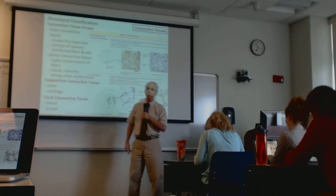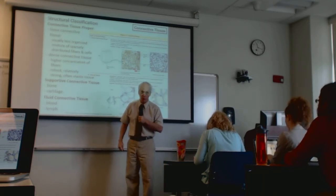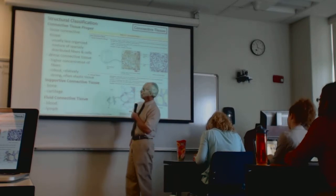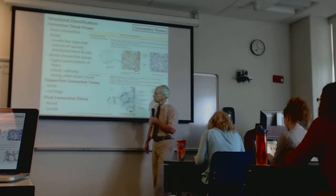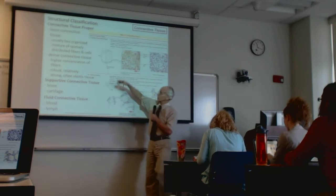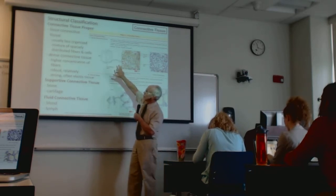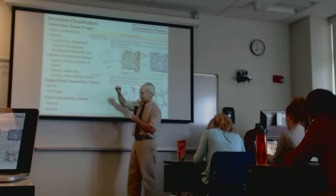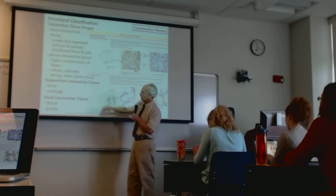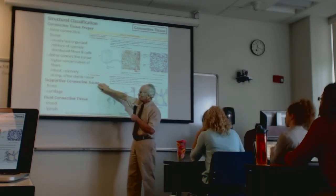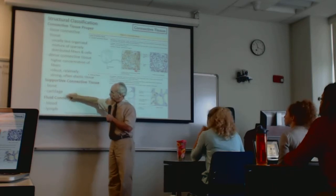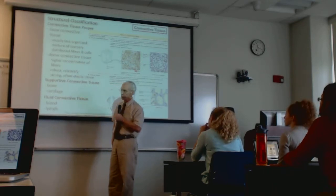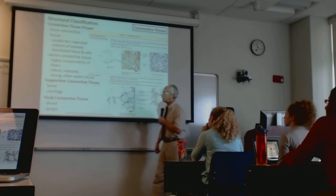So you can see the possible combinations — we could have dense regular or dense irregular connective tissue, for example. Connective tissue proper has a very clear, observable number of cells embedded in a matrix, whereas in tissues like blood and lymph it becomes more difficult to make that distinction.